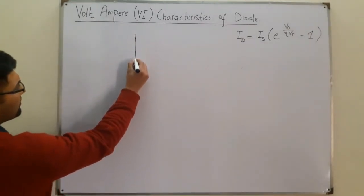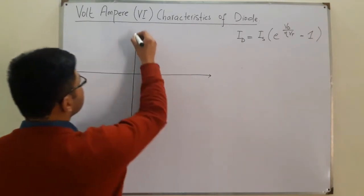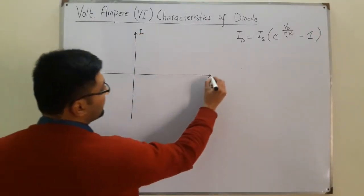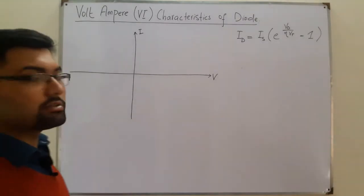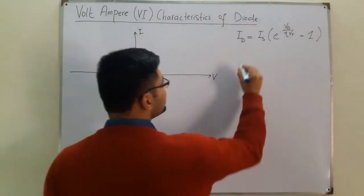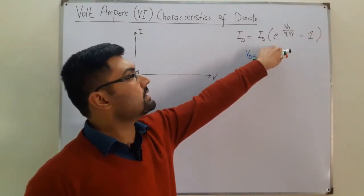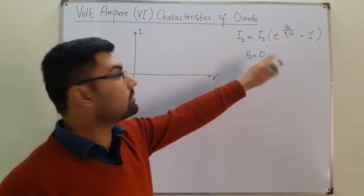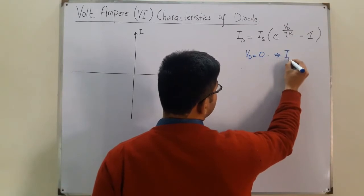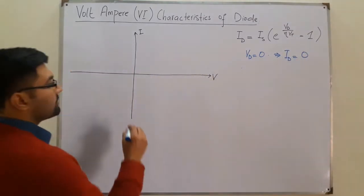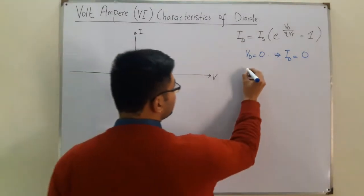We want to draw the graph of current versus voltage across the diode. Starting with the no-bias state: when VD = 0 volts, the exponent becomes e^0 = 1, so 1 − 1 = 0, giving IS × 0 = 0. Therefore ID = 0, which is our starting point on the graph.